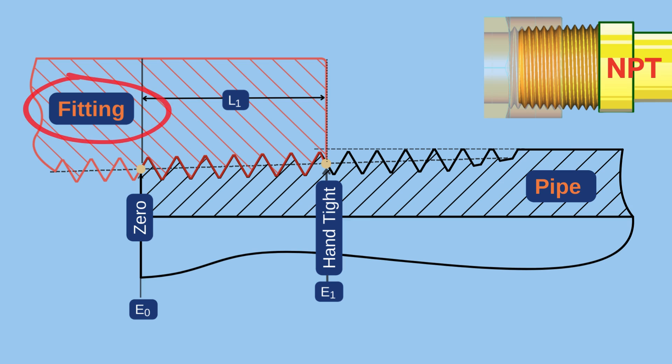On internal threads, it is called the pitch diameter at the large end. To form the seal, the assembly continues with the aid of a wrench, an additional distance called wrench allowance.